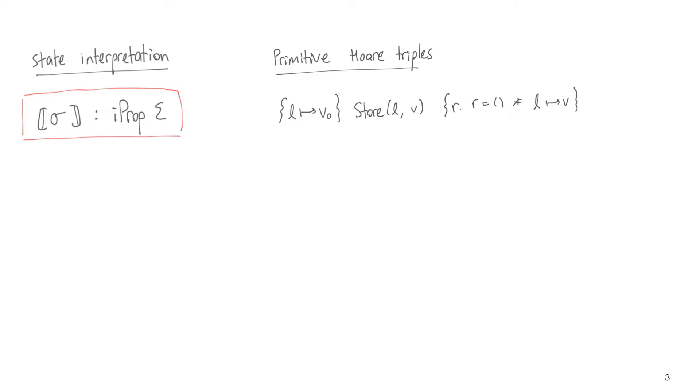So recall that we defined our own notion of state for the language, so it makes sense that we need some way to connect this state to weakest preconditions. The way that works is with the state interpretation function, which takes a state in the language and maps it into some ghost state in Iris that represents intuitively owning the entire state of the language.